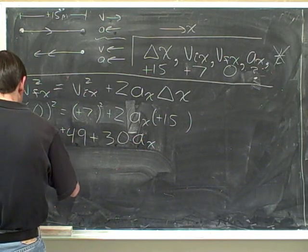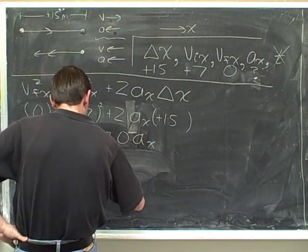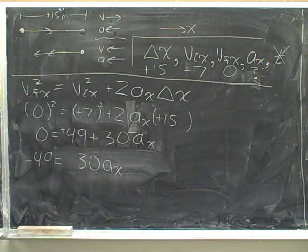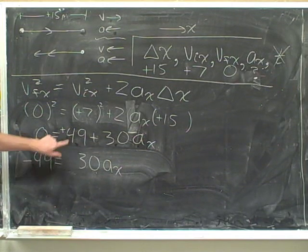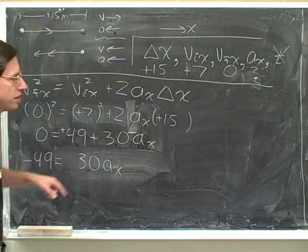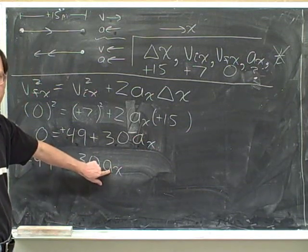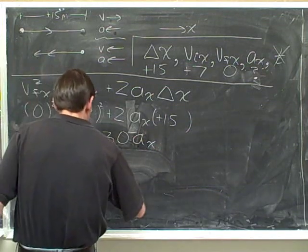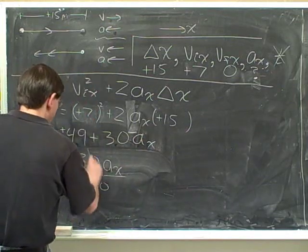So then we would end up with negative 49 equals 30 times ax. If you subtract 49 from both sides, you get negative 49 on the left. And you just get rid of the 49 on the right. That's why we were subtracting. Now we can get rid of the 30. How do we get rid of the 30? Remember, do the opposite. The 30 is being multiplied times the variable. So we need to divide. And you can see that will get rid of the 30.